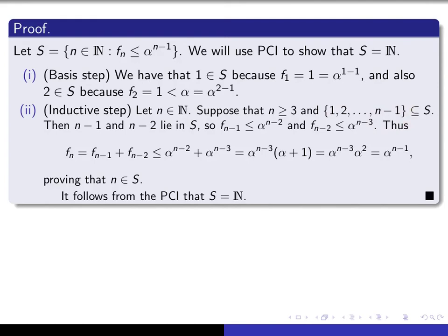And that means that F sub N minus 1 and F sub N minus 2 are smaller than the appropriate power of alpha. In other words, F sub N minus 1 is less than or equal to alpha to the N minus 2 and F sub N minus 2 is less than or equal to alpha to the N minus 3. That's what it means to say that N minus 1 lies in the set S and N minus 2 lies in the set S. Now using this fact, we need to deduce that this happens. So I'm not going to write this entire thing down. I'm going to start on the left side, so that's what I do here, and I'm going to prove ultimately that it's smaller than or equal to alpha to the N minus 1.